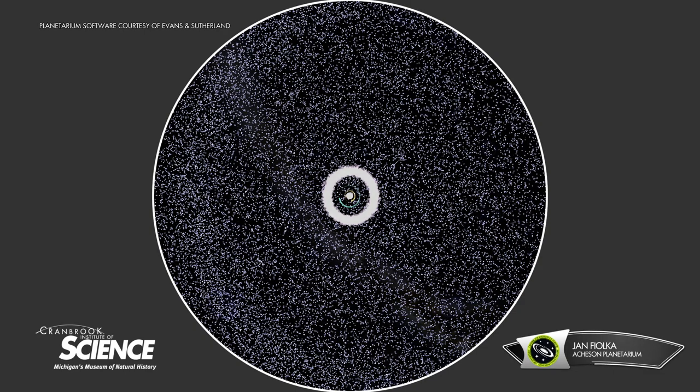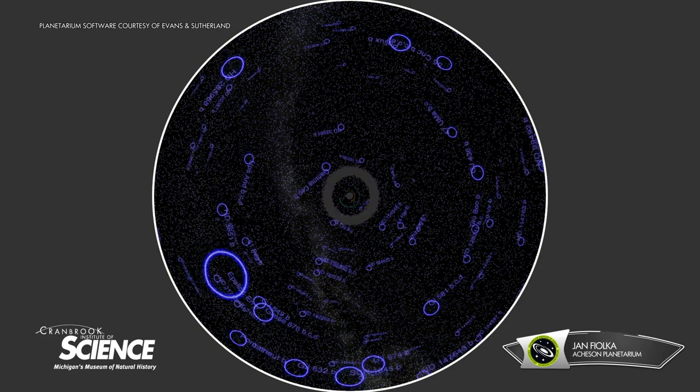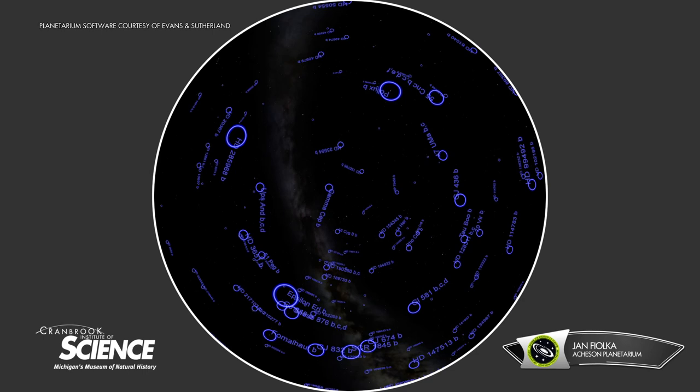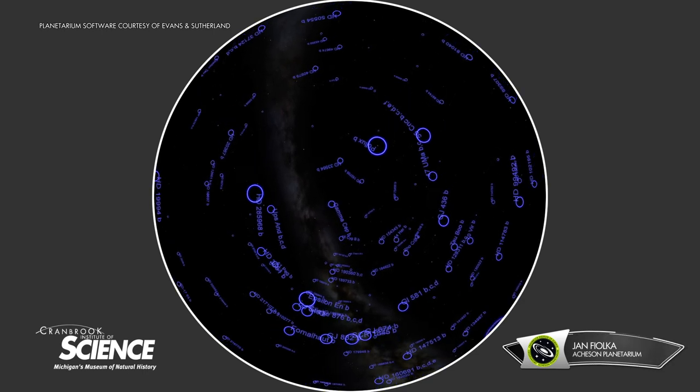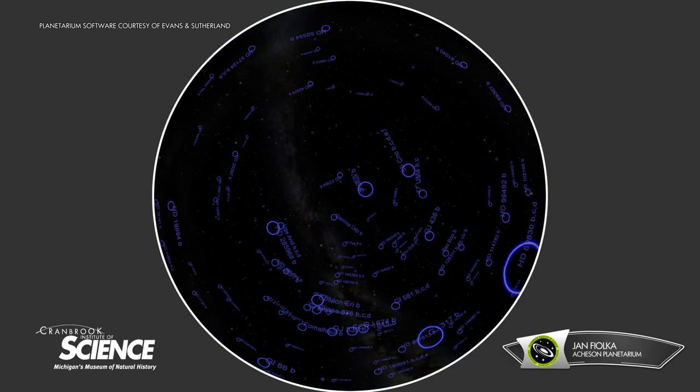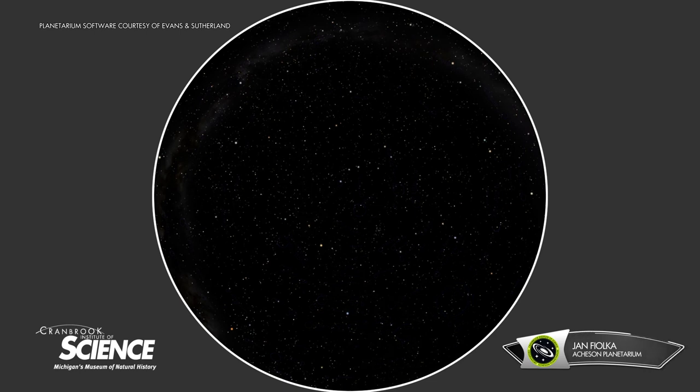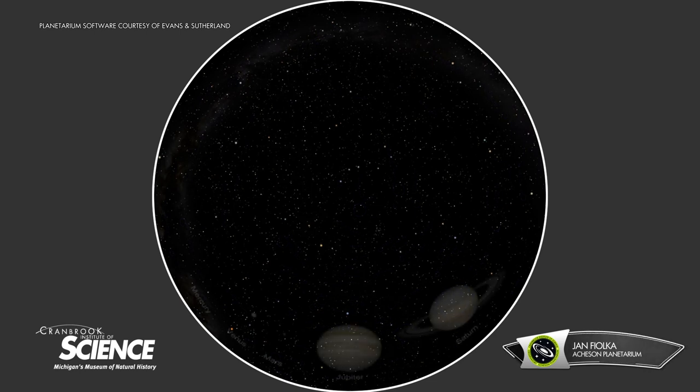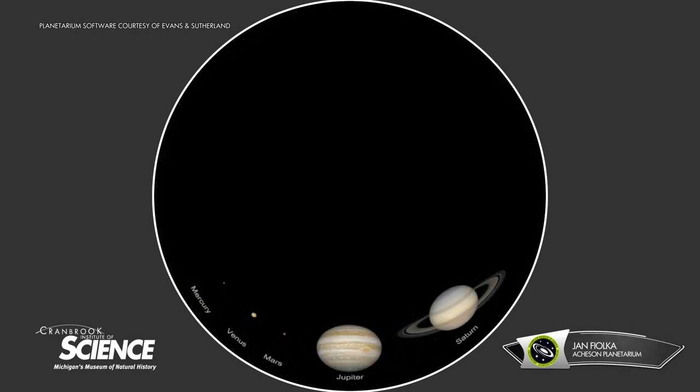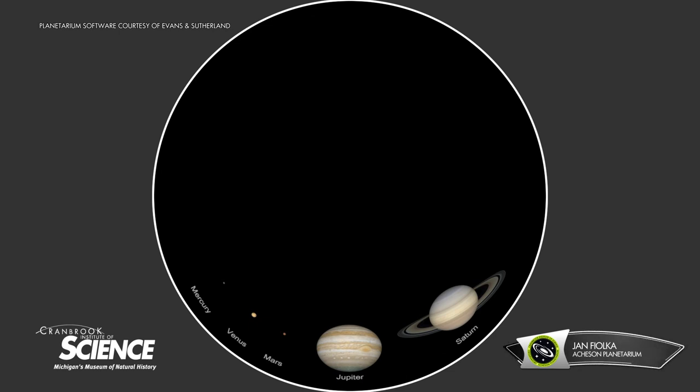Even now, we've discovered worlds outside of our own solar system, orbiting around other stars. And it's the fact that you can see five of them with just your eyes alone, Mercury, Venus, Mars, Jupiter, and Saturn, that makes them such a fascinating sight for us all.